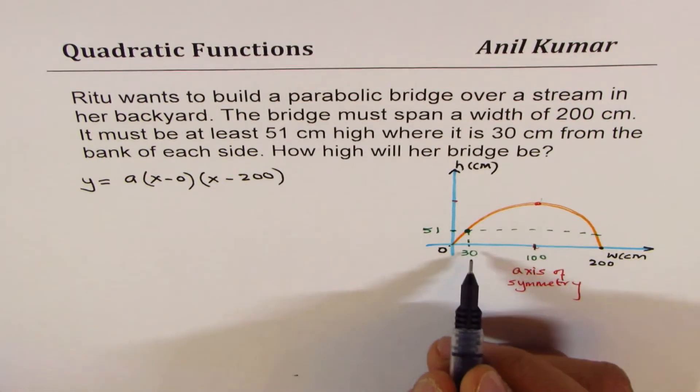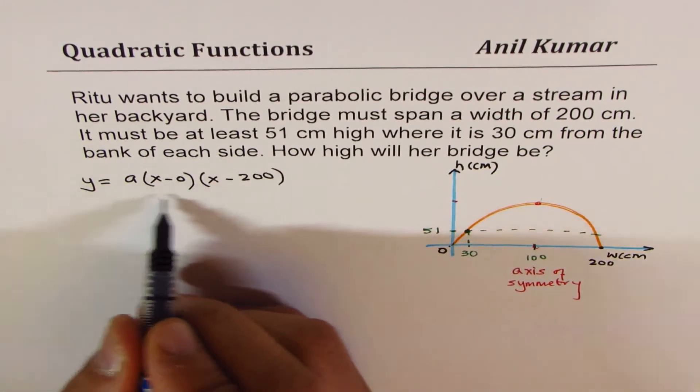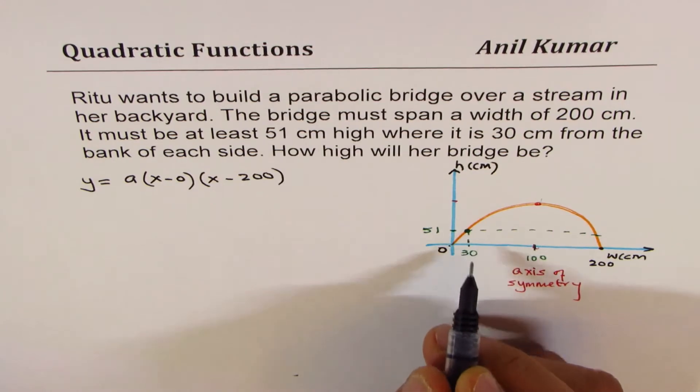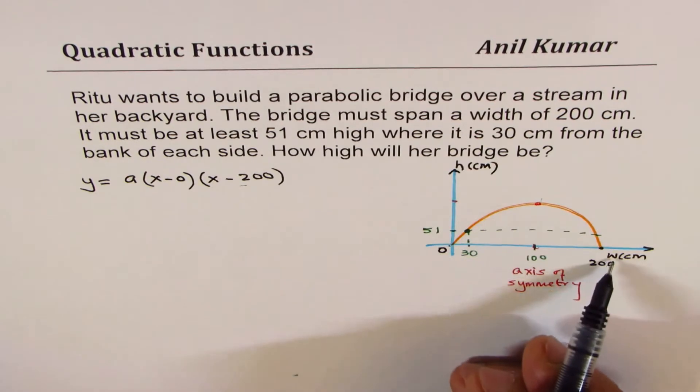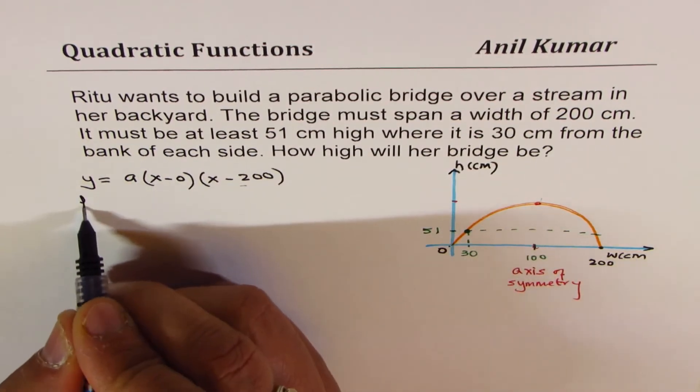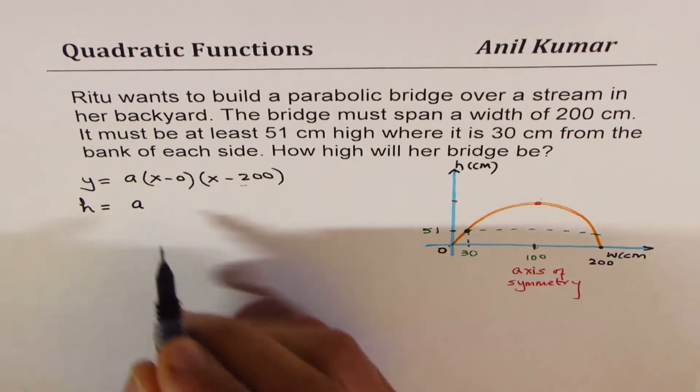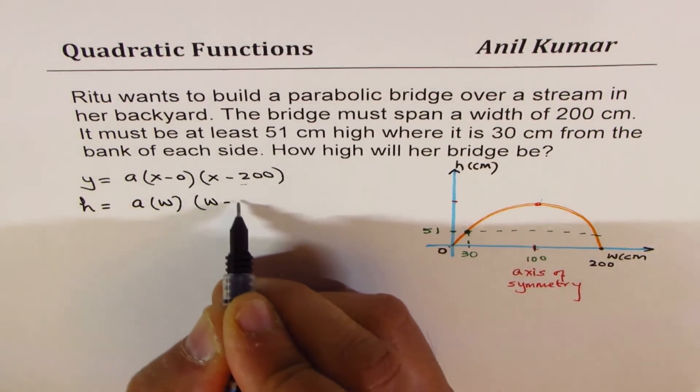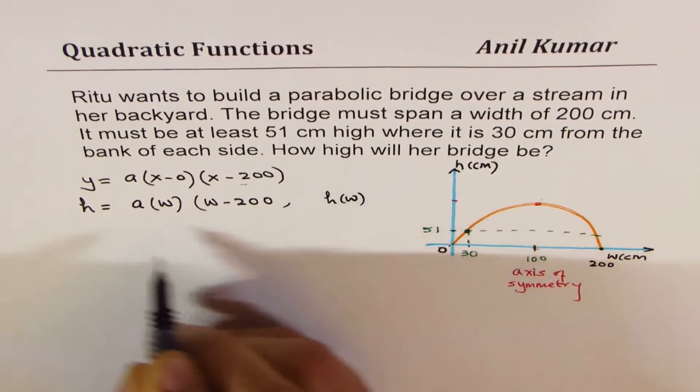To find the value of a, we could use this point where 30 is along the x-axis. So we'll write in this equation 30 for the distance along the x-axis. Since I wrote in this equation, let me rewrite in terms of height and width. So I could write this as height equals to a times width times w minus 200. We are writing h in terms of width.